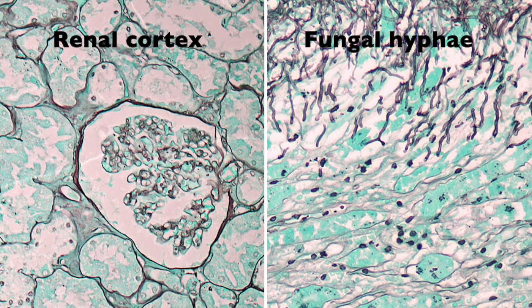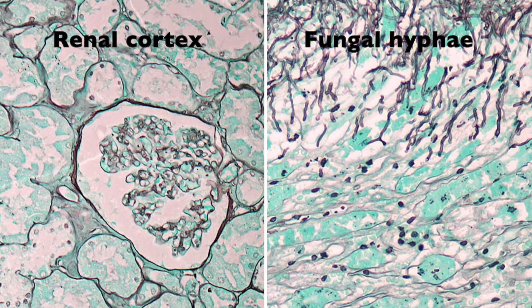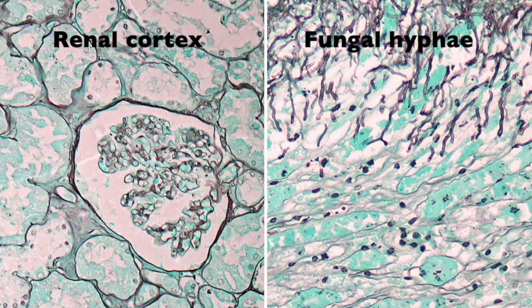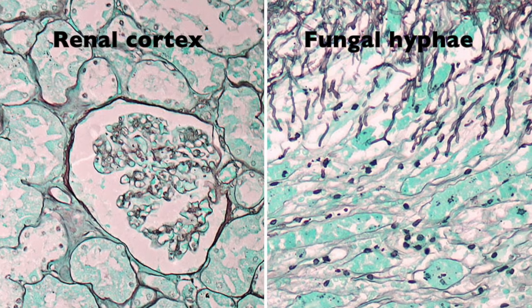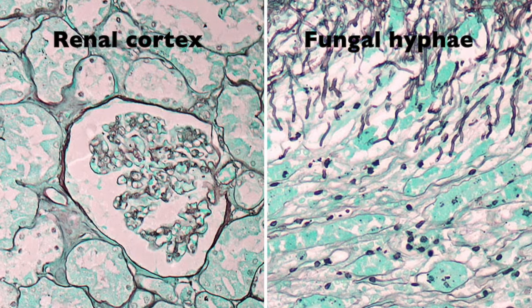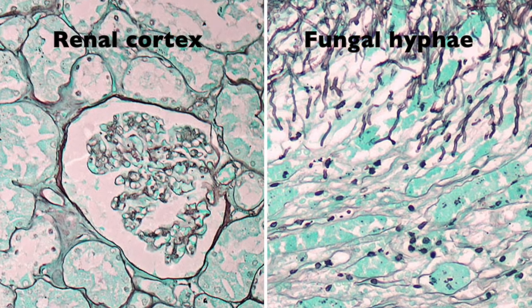As can be seen here in these two images of stained tissue, on the left we have some renal cortex where silver methanamine has been used to demonstrate basement membranes within the various tubular elements as well as within the renal corpuscle.